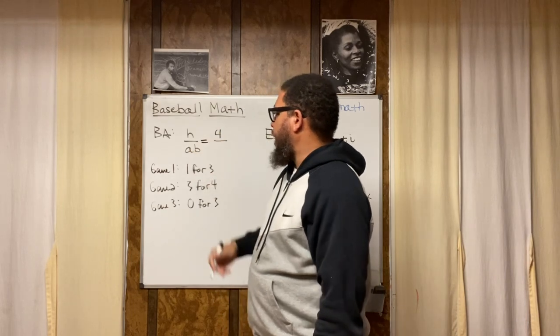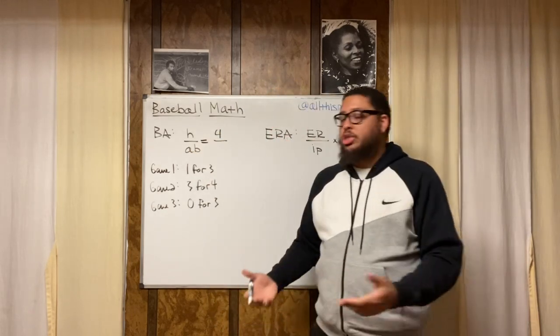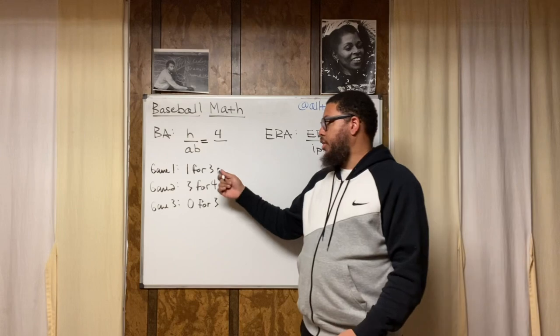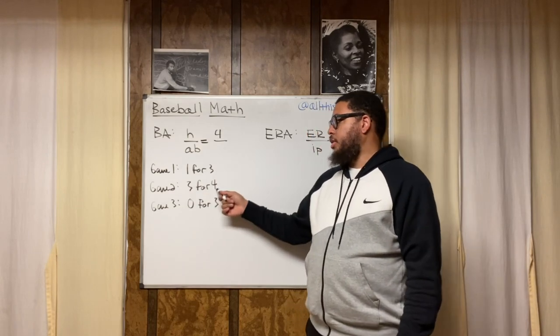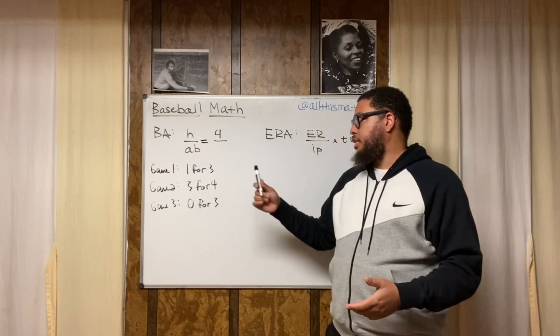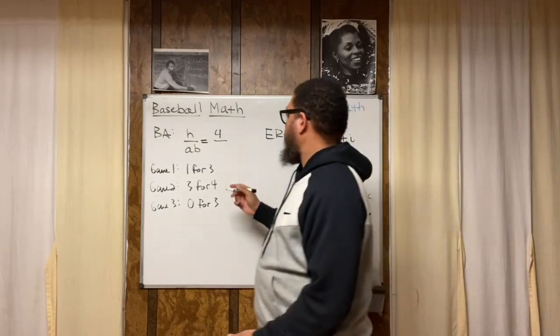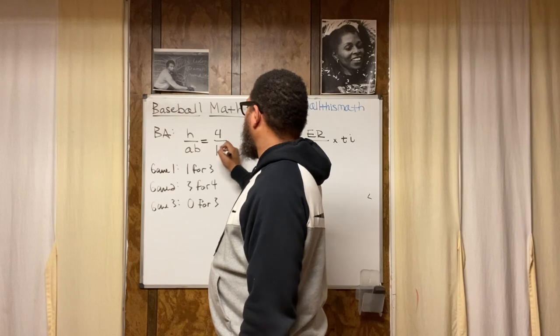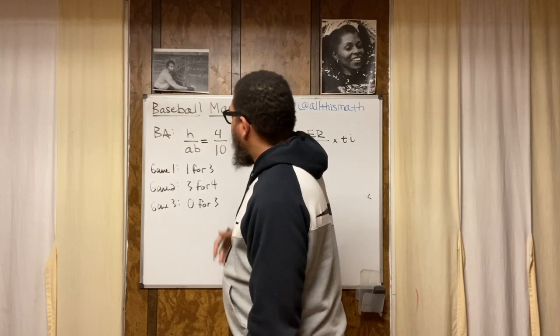Then AB is your at-bats. How many at-bats did you have? Since you went one for three in that first game, you had three at-bats. Three for four, second game, you had four at-bats. Zero for three, you had three at-bats. So three plus four is seven, seven plus three is ten. So that's going to be your total number of at-bats.